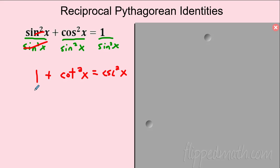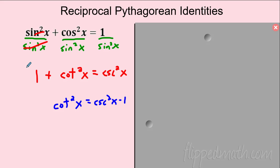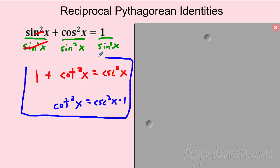We can also manipulate that identity further. Subtract one from both sides and we get: cotangent² x = cosecant² x − 1. So that gives us the cotangent and cosecant pair of identities.